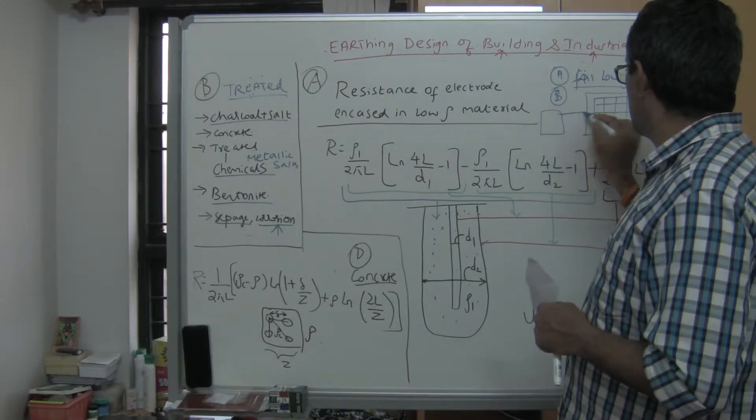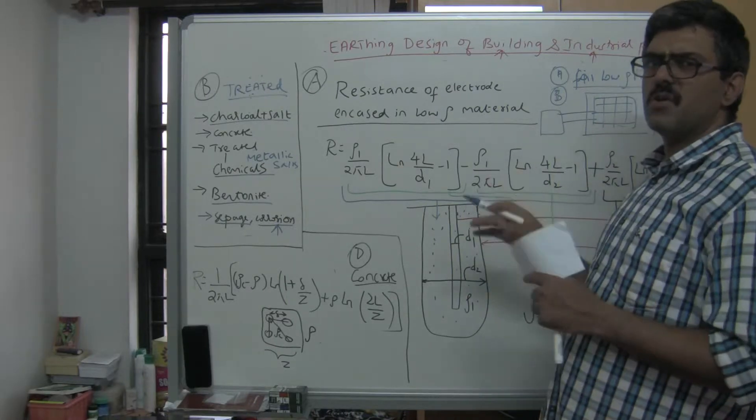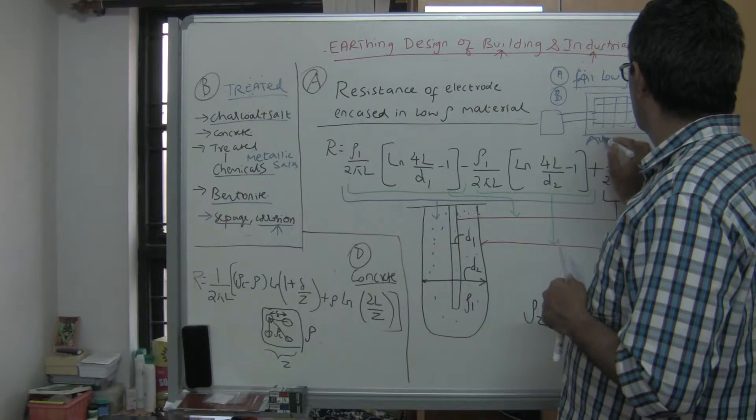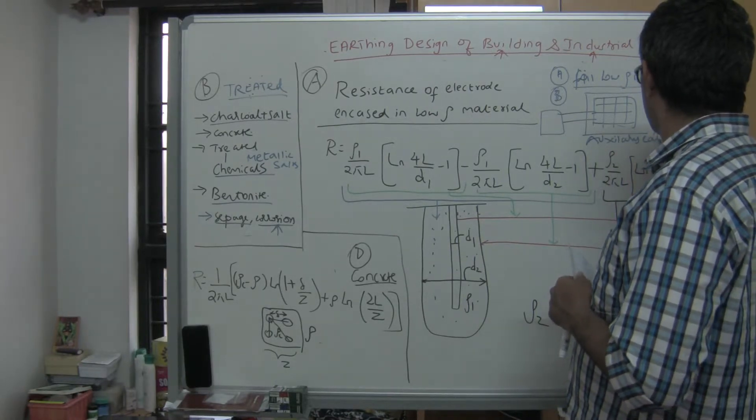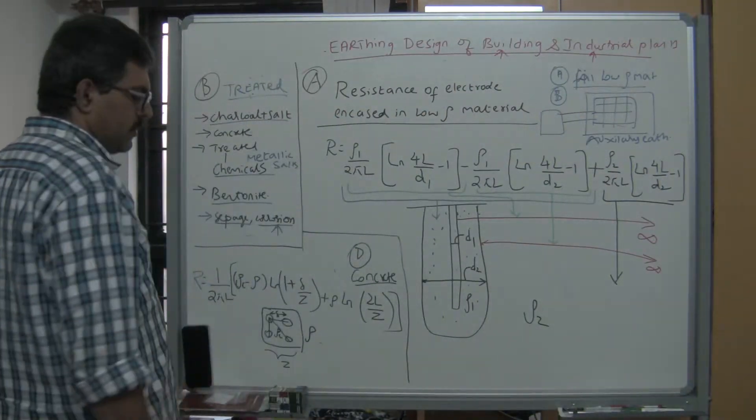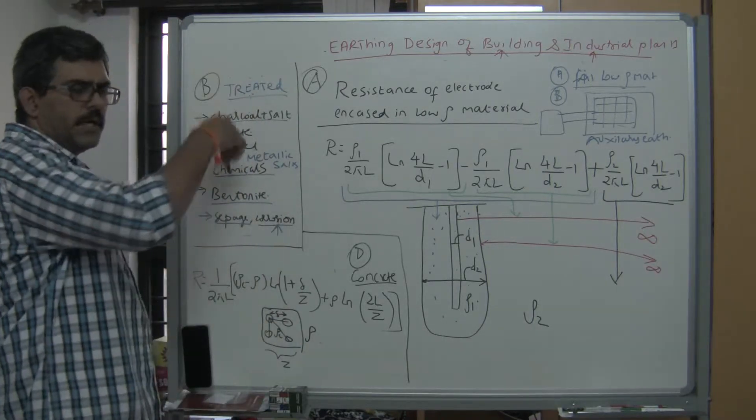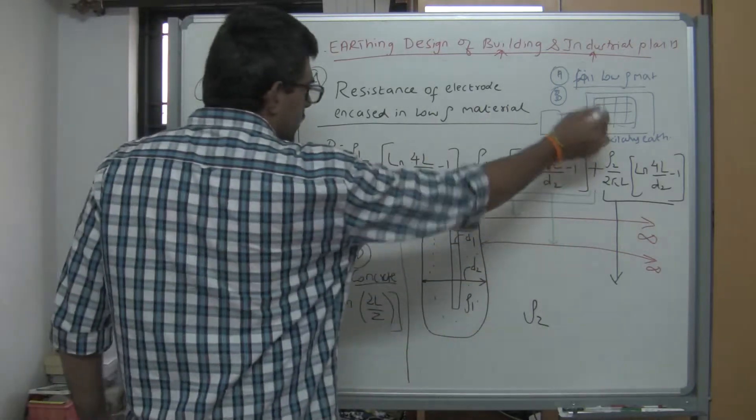Connect the earth grid here to a separate earth grid remotely - this is called an auxiliary earth mat or earth grid. So whenever you have high resistivity, one option is to go for a treated earth pit, and another option is to go for an auxiliary earth grid.